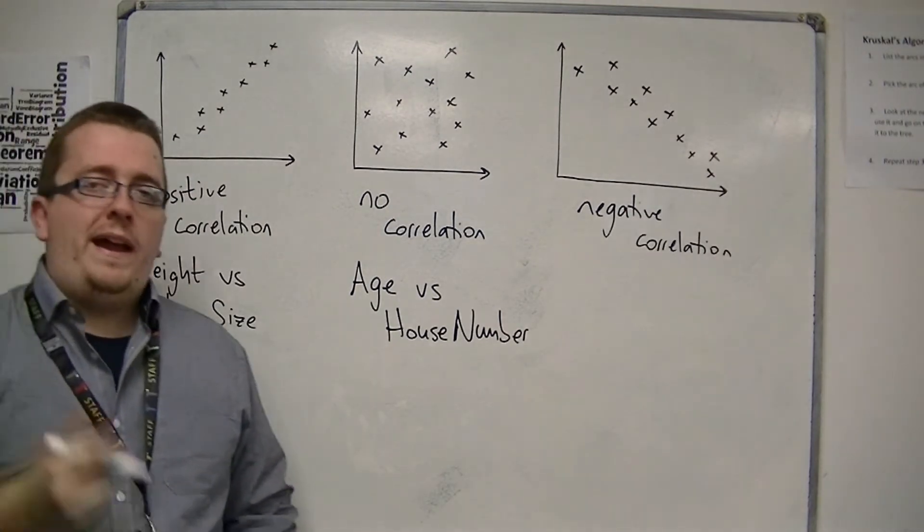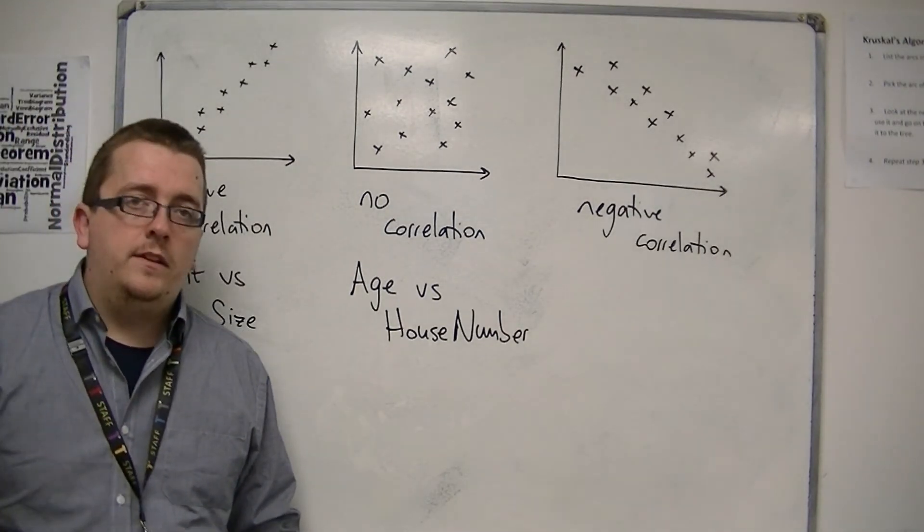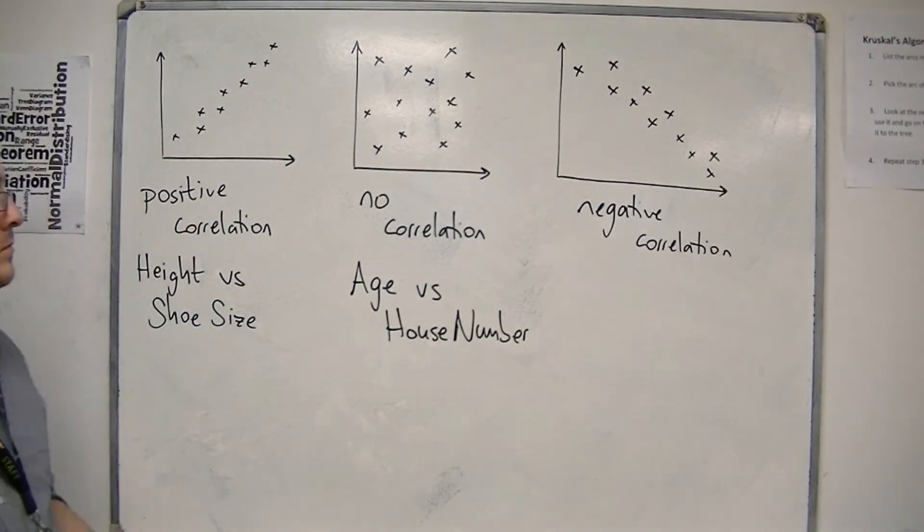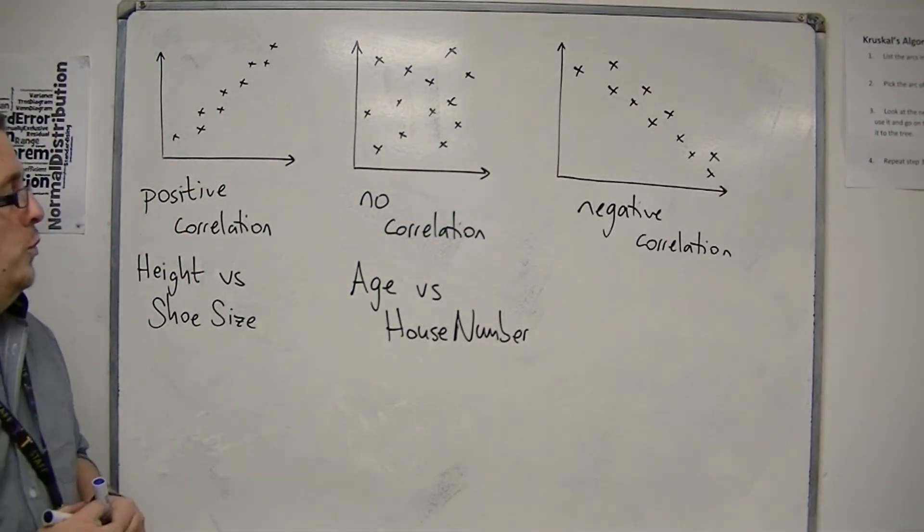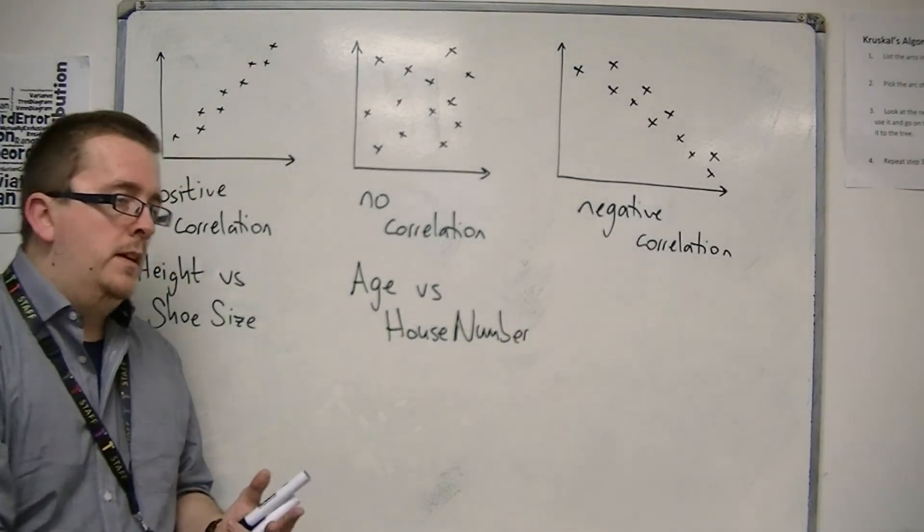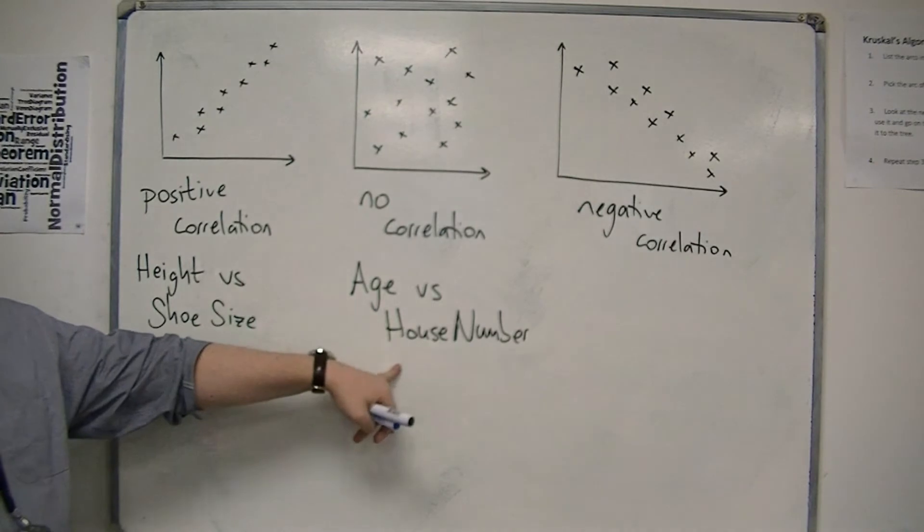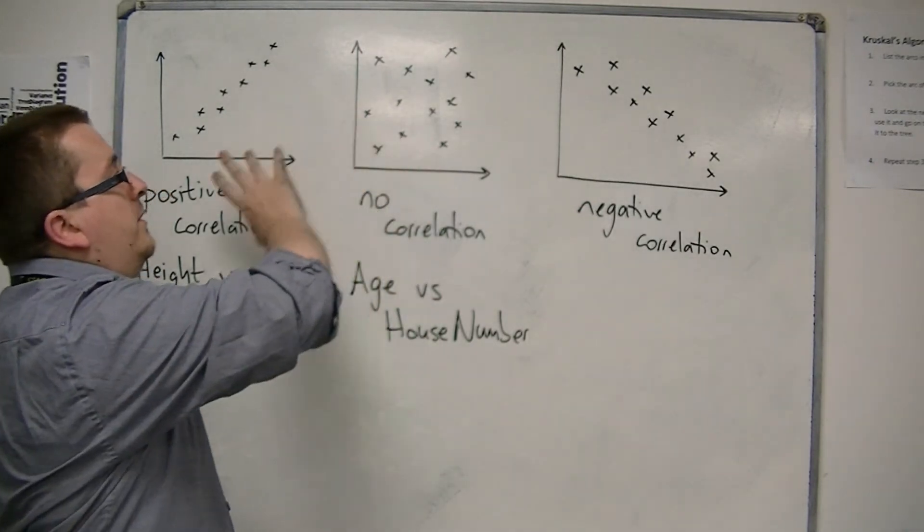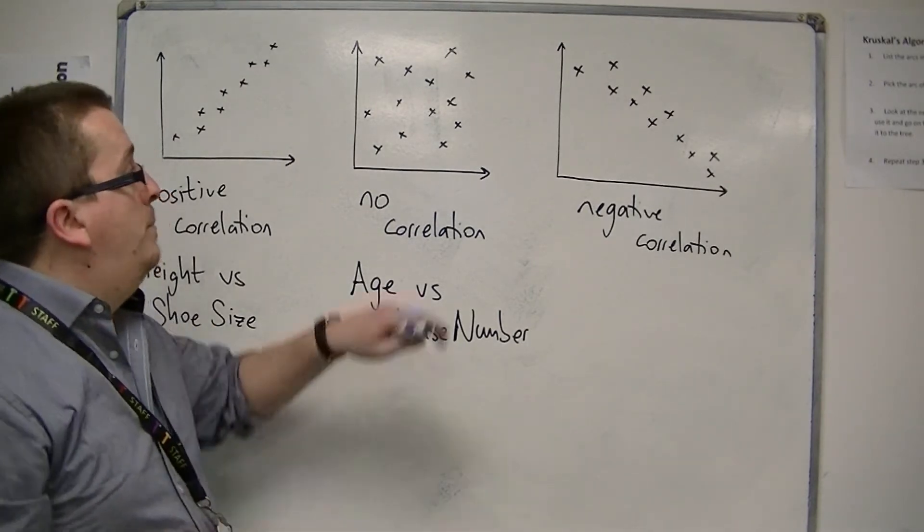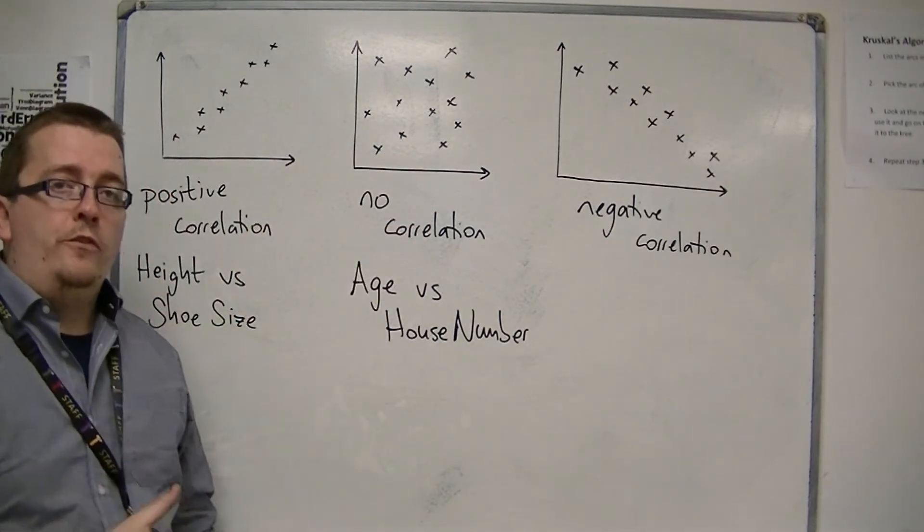Would someone with a house number of 238 be older? Or would people with lower house numbers generally be younger? And of course, this makes no sense. So, we would expect that if I collated that data and then plotted it, that there would be no correlation, the data would be all over the place.